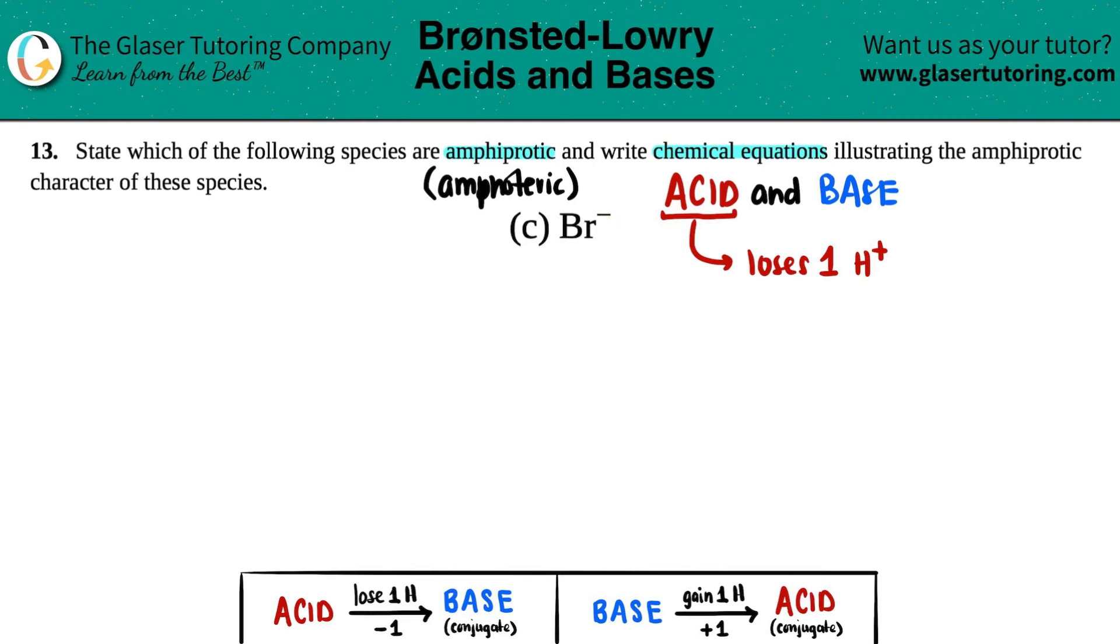So how can I lose an element that I don't have, right? Since Br minus doesn't have a hydrogen, can it lose it? No. So can it act as an acid? Not here, not never.